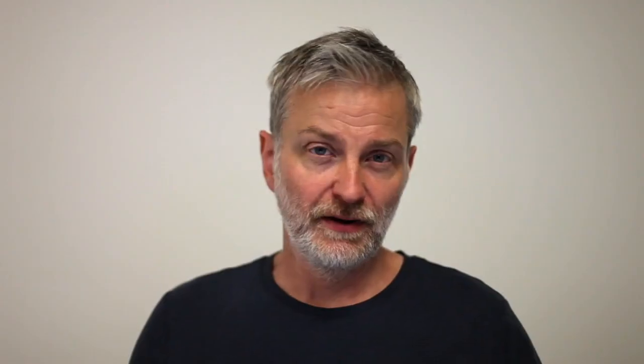For both ridge and LASSO you're introducing a new hyperparameter lambda, and you have to find some way of setting this — you will probably find your validation set useful for this purpose.